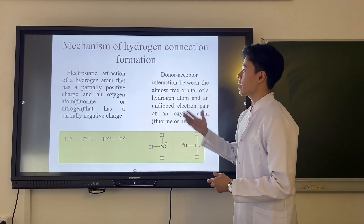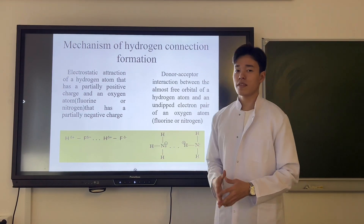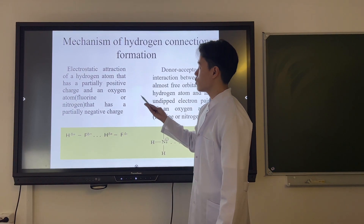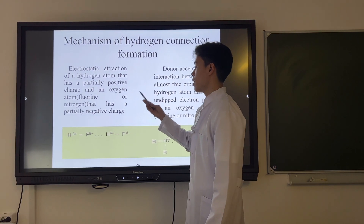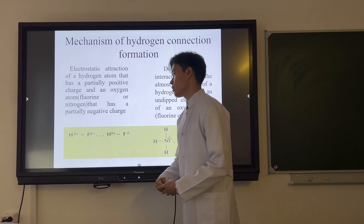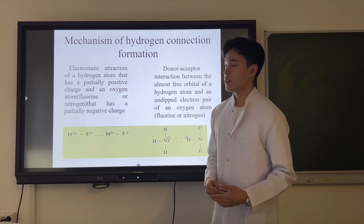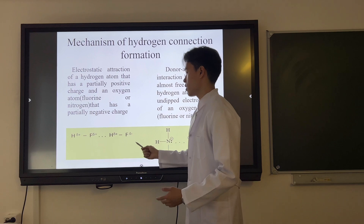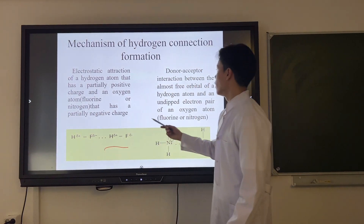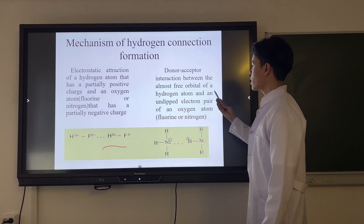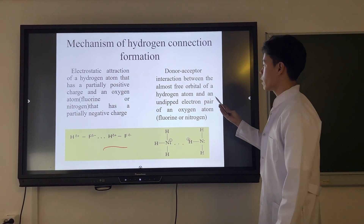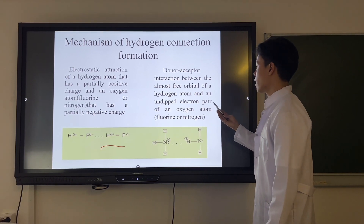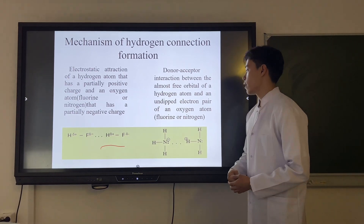The mechanism of hydrogen bond formation: first, the electrostatic attraction of a hydrogen atom that has a partially positive charge and an oxygen, fluorine, or nitrogen atom that has a partially negative charge. Next, the donor-acceptor interaction between the orbital of a hydrogen atom and the lone electron pair of an oxygen atom.